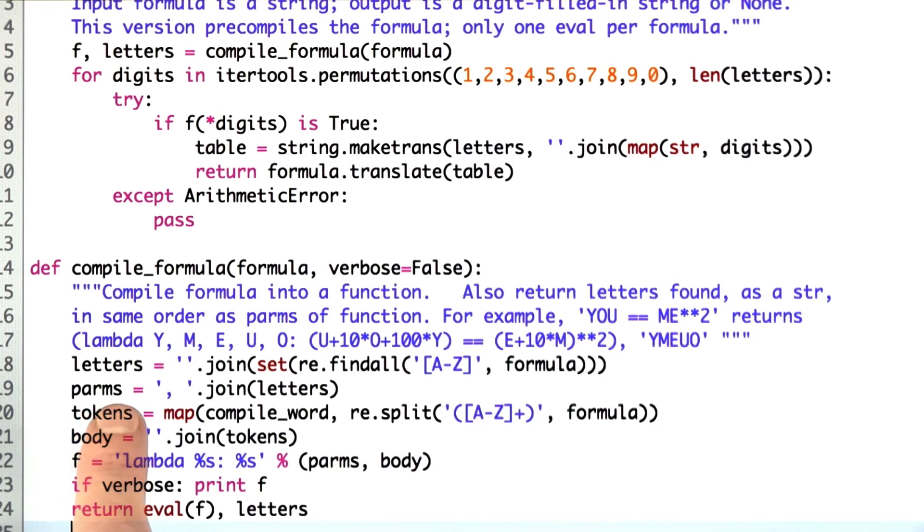Then I figure out that the list of parameters I want to put into my function is going to be a string consisting of the letters with a comma in between them. Then I figure out all the tokens. A token is an individual term like the u or the equal signs or the me and so on.